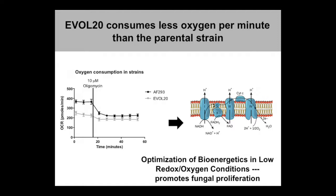This strain is using oxygen better and more efficiently. Using the Seahorse bioflux analyzer — adapted for use with Aspergillus — oxygen consumption rates are dramatically different between the two strains, with the evolved strain consuming much less oxygen than the parental strain, presumably providing oxygen for other anabolic processes that drive proliferation like cell wall biosynthesis. Notably, eukaryotic cells from mammals consume around 200 picomoles of oxygen per minute, while Aspergillus shows a two to three-fold increase — this fungus consumes a massive amount of oxygen in a very short period of time.